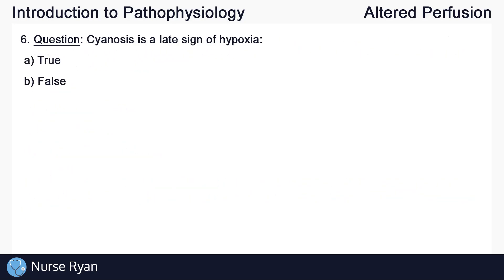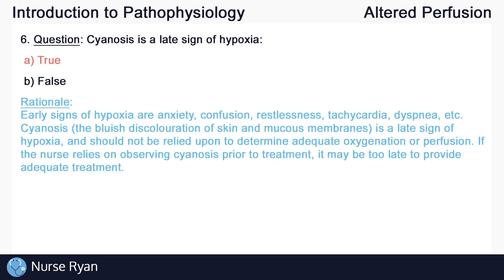Question number six: cyanosis is a late sign of hypoxia. The answer is A — true. Early signs of hypoxia include anxiety, confusion, restlessness, tachycardia, and dyspnea. Cyanosis, the bluish discoloration of skin and mucous membranes, is a late sign of hypoxia and should not be relied upon to determine adequate oxygenation or perfusion. If the nurse relies on observing cyanosis prior to treatment, it may be too late to provide adequate treatment.